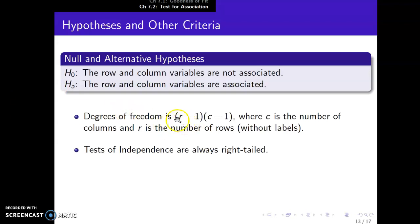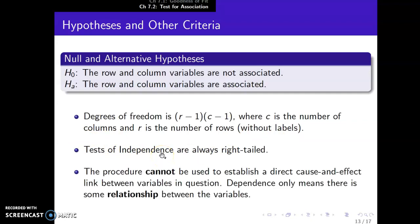Alright, degrees of freedom formula is R minus 1 times C minus 1. R is the number of rows and C is the number of columns, again without labels. And just like the goodness of fit, these tests for independence or tests for association are always right-tailed. Okay, I did have it on the slide: This procedure cannot be used to establish a direct cause and effect between the variables in question. You can't do that from just one sample and one hypothesis test generally. Dependence only means that there is some relationship or association between the variables. Figuring out what exactly and how that exact association is, whether A implies B or B implies A or there's some symbiotic relationship, is a lot more difficult.